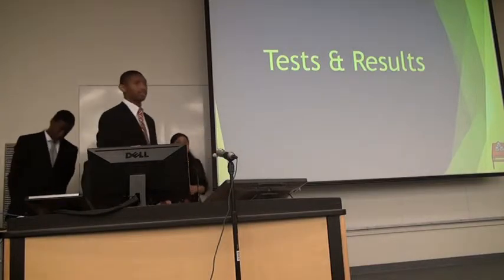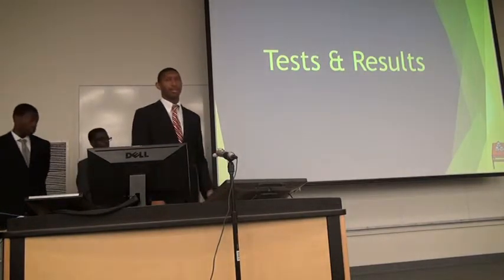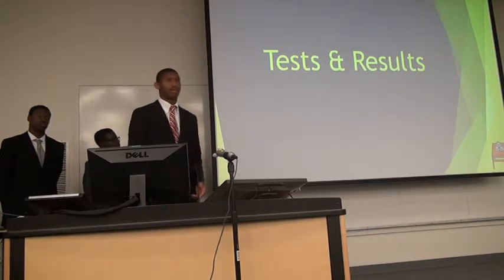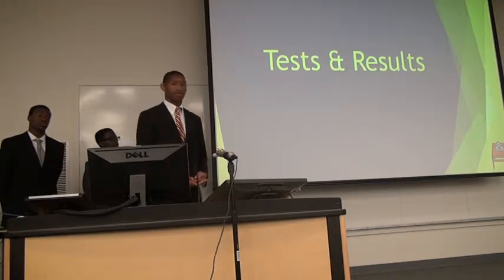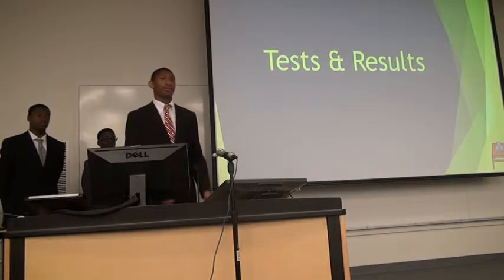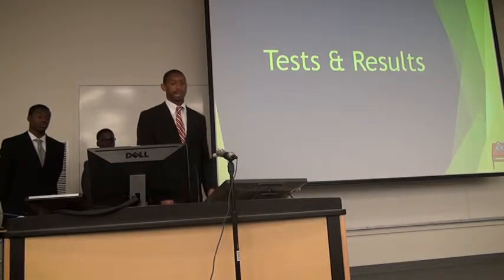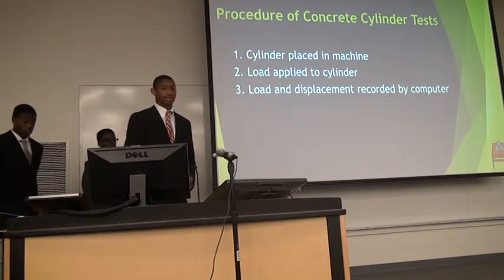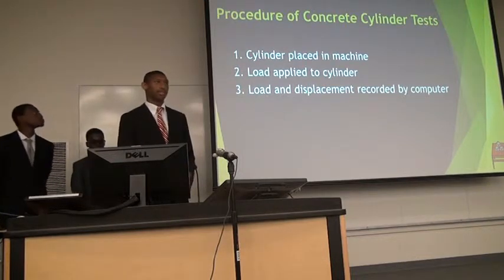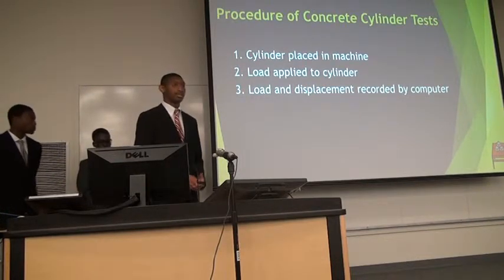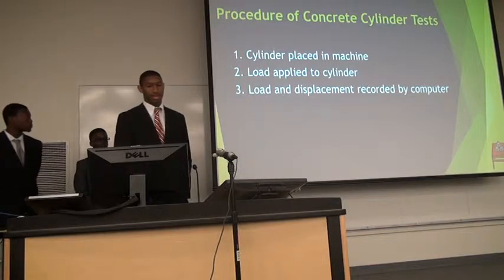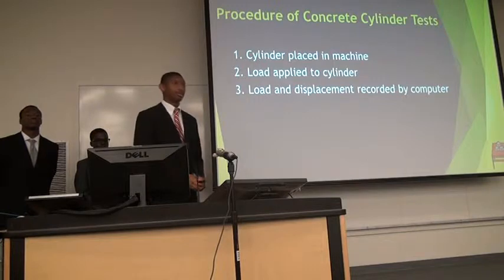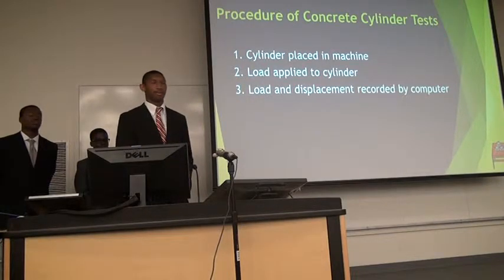Now we'll talk about the testing results of the project we conducted. We made concrete cylinders with the three types of concrete: conventional, porous, and fiber reinforced porous. The cylinders were four inches in diameter and eight inches in height. The procedure: we placed the cylinders in the Forney Concrete Cylinder Test Machine, applied load to the cylinders, then tested load and displacement, with all data recorded on the computer.